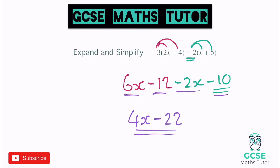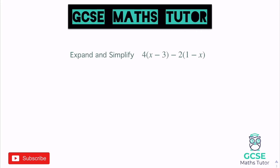Let's look at one more before we have a go. This one is a little bit jumbled up and different to the last few, but we'll follow the same process. First bracket: 4 times x gives 4x, and 4 times negative 3 gives negative 12.